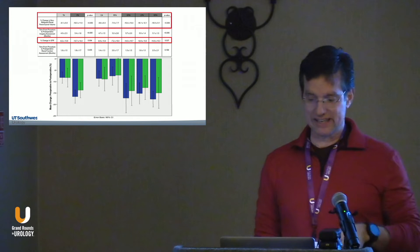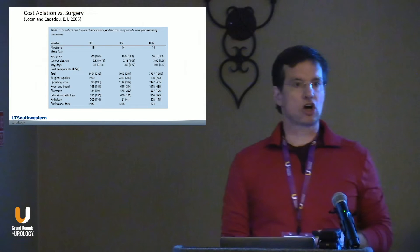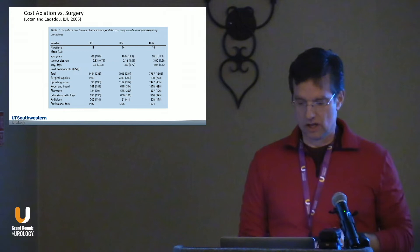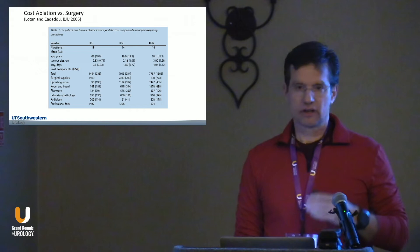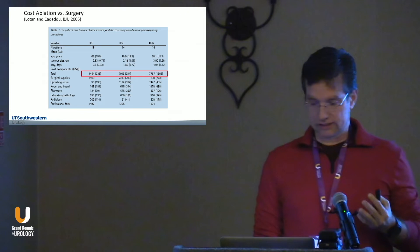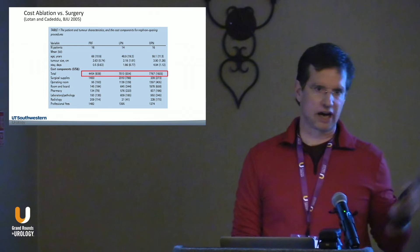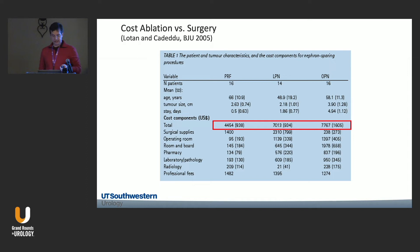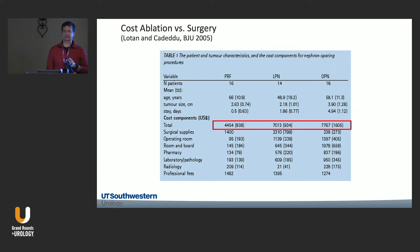Regarding cost — robotic partial nephrectomy is literally twice the cost of a percutaneous ablation. This 2005 data was the first paper showing the cost advantage, and subsequent papers confirm it. A percutaneous ablation was about 60% of laparoscopic cost; with robotic it's closer to 50%. You can do two percutaneous ablations for the cost of one robotic partial nephrectomy — without the pain, bleeding, or hospital recovery. That said, reimbursement for percutaneous ablation has deteriorated significantly compared to partial nephrectomy.